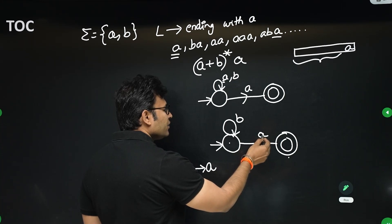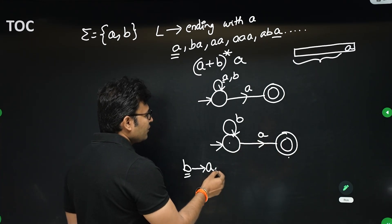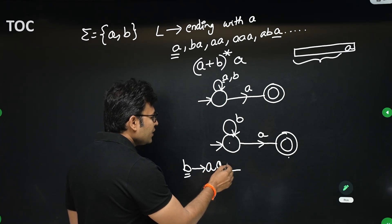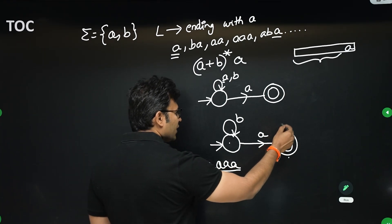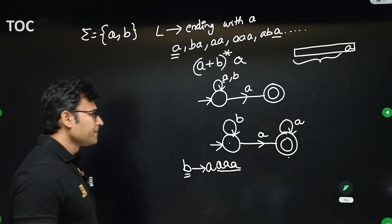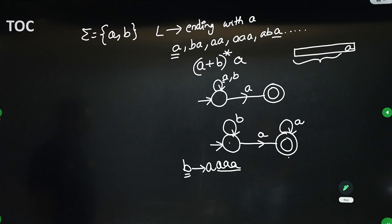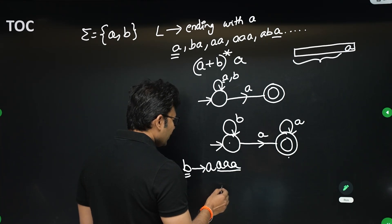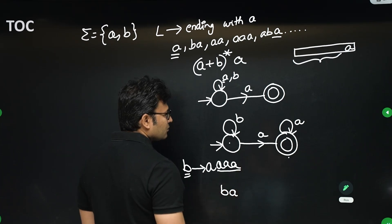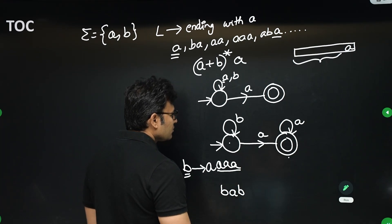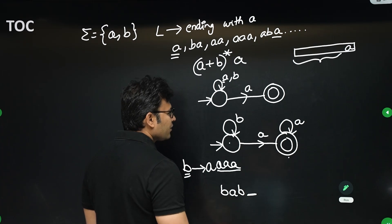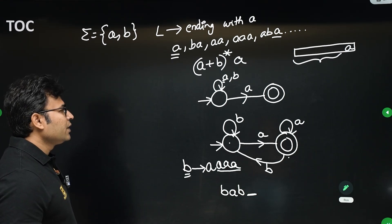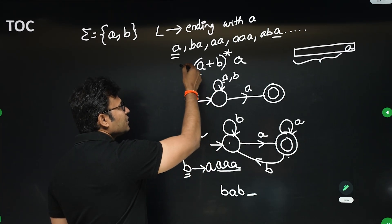When you see 'a', thinking that it is the last 'a', you reach the accept state. But if more symbols come after that 'a': any number of additional a's still keep the string ending with 'a', so we stay in the accept state. If we get a 'b', we have to wait for 'a' again — so on 'b' we go back and wait for 'a'. This is both a DFA and an NFA, and this is the regular expression for it.